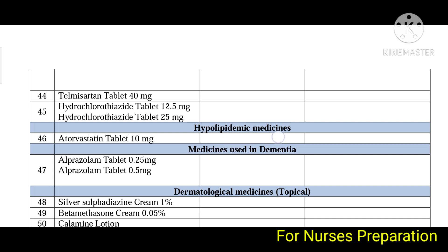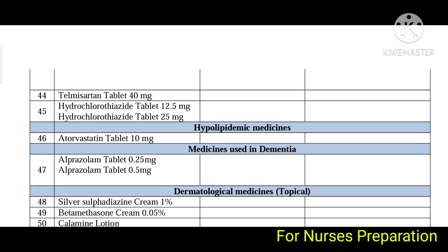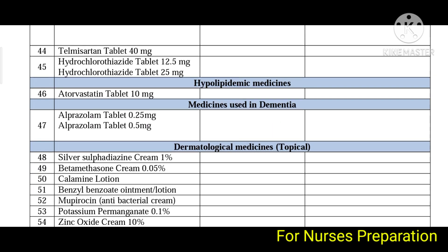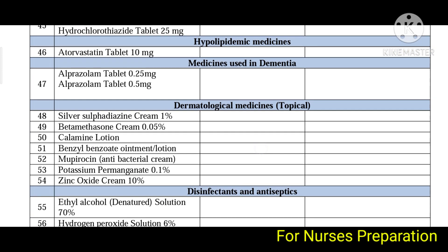Hypolipidemic medicines — for example atorvastatin tablet — are included. Next are medicines to treat dementia; this list includes alprazolam. Next are dermatological medicines.